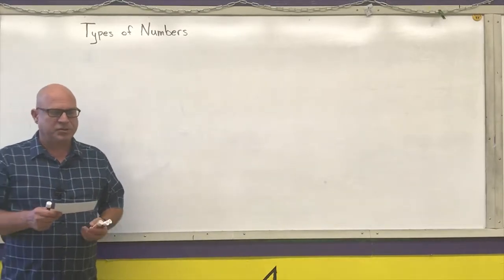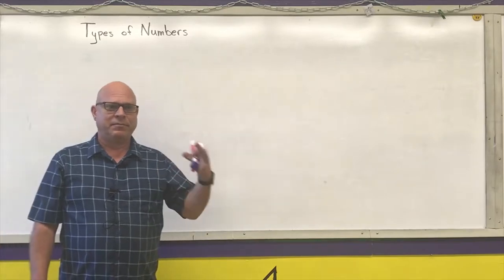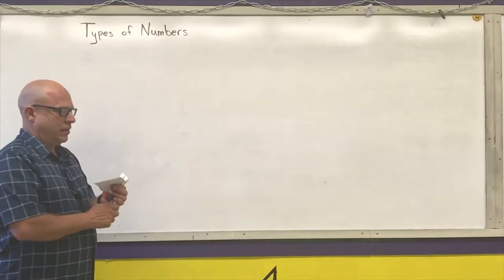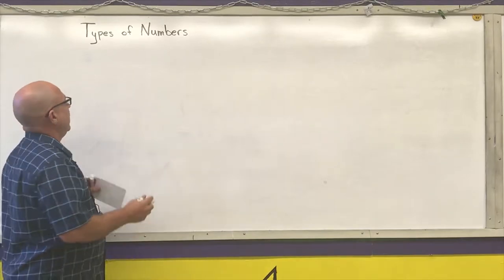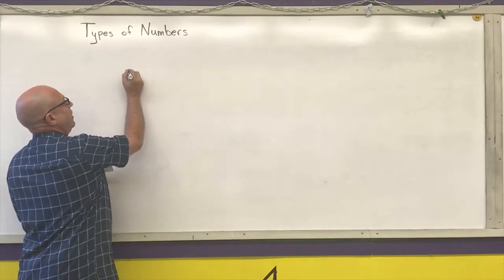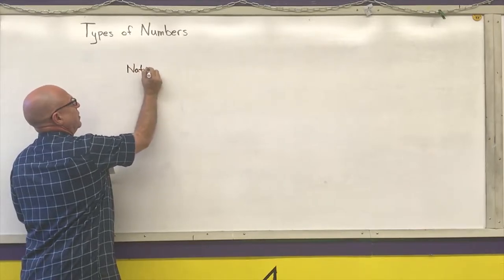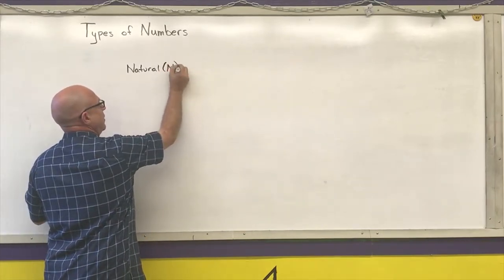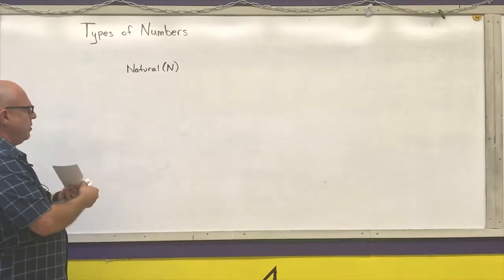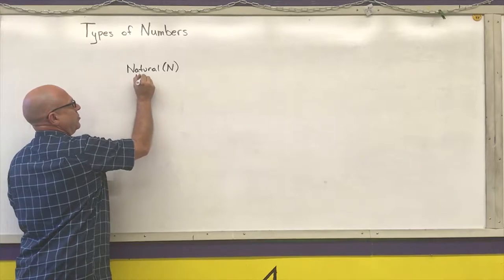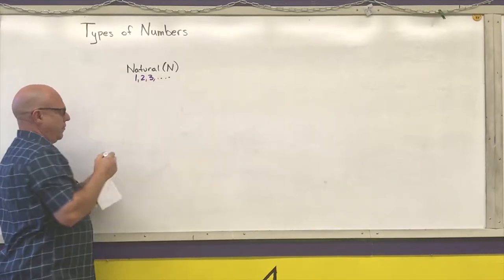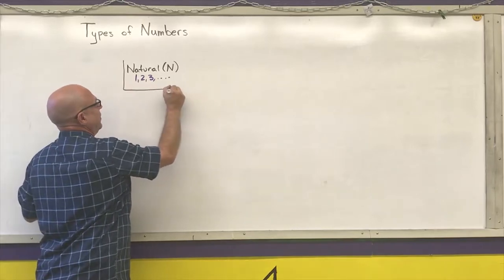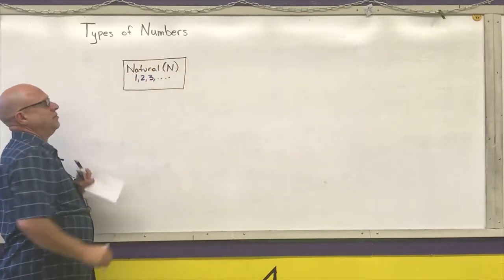We're going to talk about the different types of numbers that we have, and we're basically going to follow the same progression that you learn math starting when you were growing up. So the first thing kids usually learn how to do is count, and the first type of numbers we have are the natural numbers. The natural numbers have the symbol capital N, and these are our counting numbers: one, two, three, on up. You first learn how to count, figure out how many of each type of item there is, and that gives us our natural numbers.